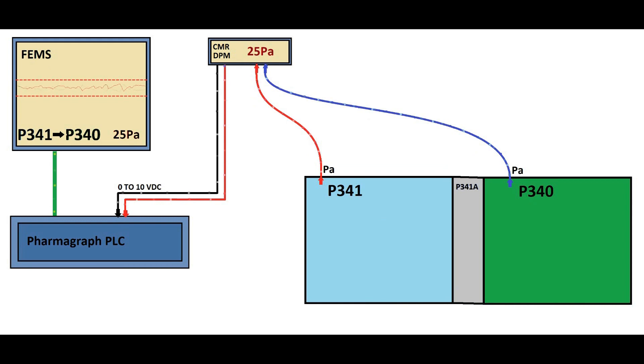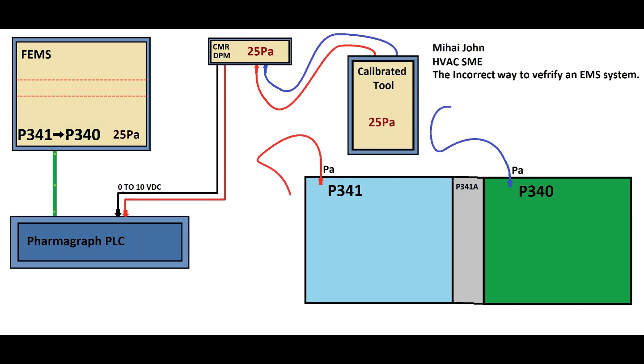Calibration and validation are crucial aspects of ensuring accuracy, reliability and compliance with good manufacturing practices in the pharmaceutical industry. In the context of differential pressure modules and the PharmaGraph software utilizing the Facility Environment Monitoring System, they play vital roles in maintaining quality and compliance.